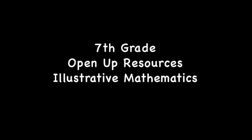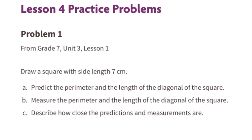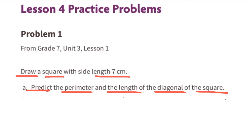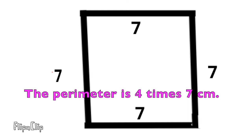7th grade Open Up Resources Illustrative Mathematics, Unit 6 Lesson 4: Reasoning About Equations and Tape Diagrams, Part 1. Problem number 1 from 7th grade Unit 3 Lesson 1: draw a square with side length 7 centimeters. Predict the perimeter and the length of the diagonal of the square. I've drawn a square with side lengths 7 centimeters.